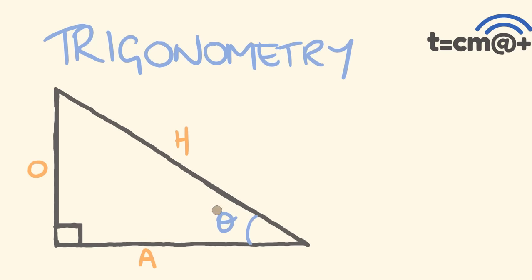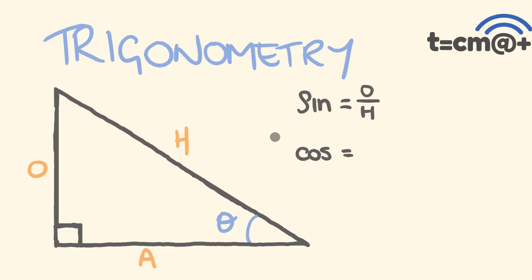All these side lengths — the opposite, the adjacent, the hypotenuse — all have particular ratios to one another based on whatever this particular angle is. There are three different functions when thinking about these ratios because there are three different ways to compare the sides. Our three main trigonometric functions are: the sine function, which is the ratio of the opposite and the hypotenuse; the cosine function, which is the ratio between the adjacent and the hypotenuse; and the tangent function, which is the ratio between the opposite and the adjacent.